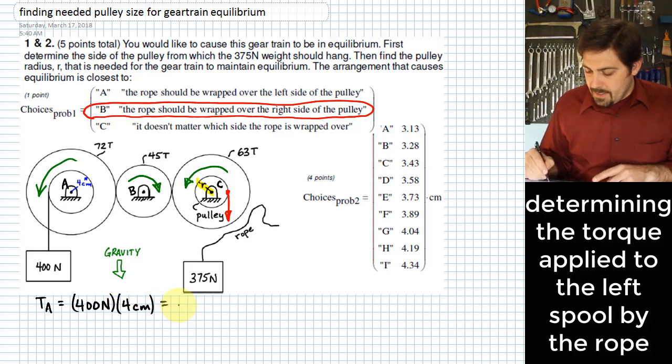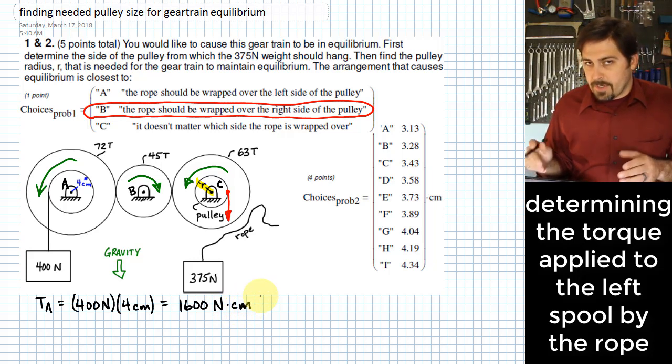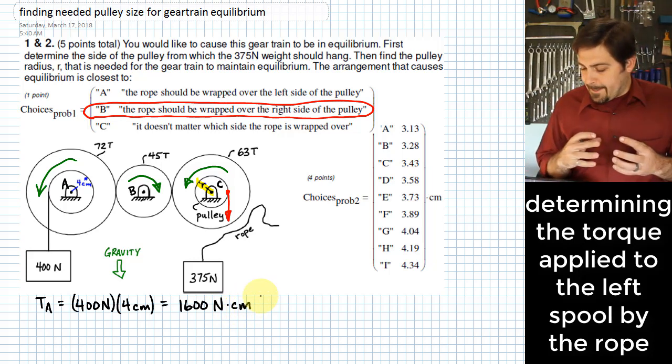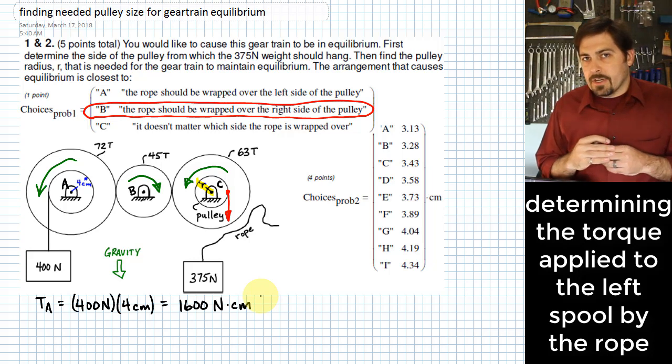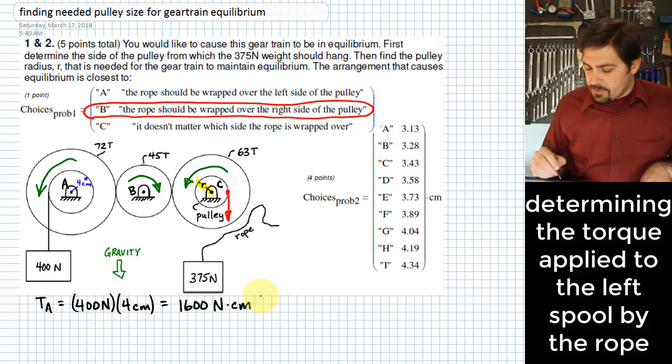400N times 4cm gives me 1600 N·cm. It might be tempting for you at this point to want to put that in a common unit system like base units for the SI system, for example. There's really not a reason because at the end of this problem you see that the units of length are going to end up in centimeters anyway. So at this point I'm just going to leave it alone.